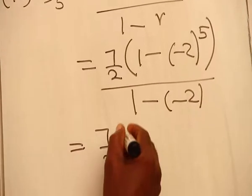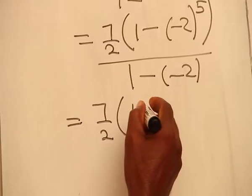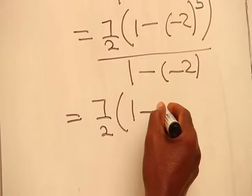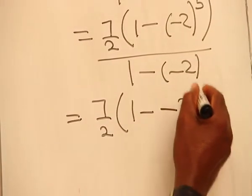this means 7 over 2 times 1 minus, minus 2 raised to the power of 5 is minus 32. Then,